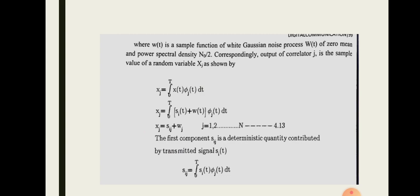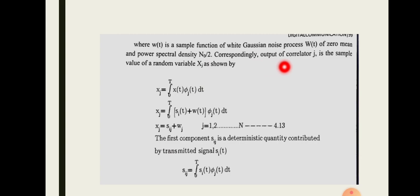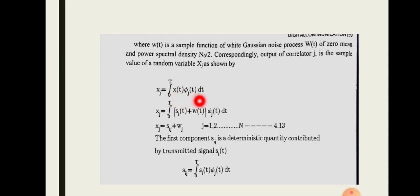Here w(t) is a sample function of the white Gaussian noise process W(t), with zero mean and power spectral density N0/2. Correspondingly, the output of correlator j is the sample value of the random variable Xj, given by Xj = integral from 0 to T of x(t) · φj(t) dt.